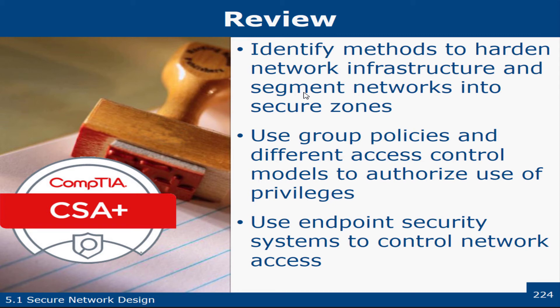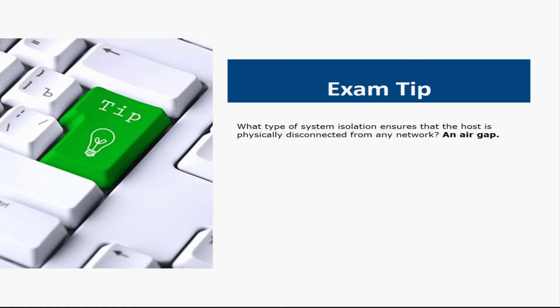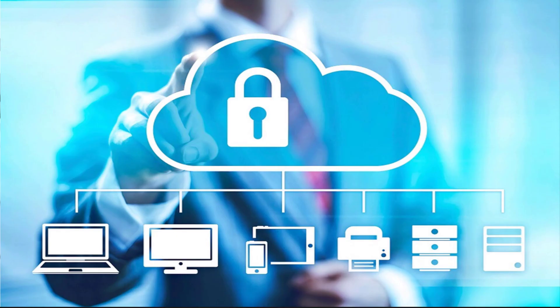We talked about different ways to harden the network. The most basic way is to not connect it to the network in the first place, but that's not realistic — you may need VLANs, VPNs, or other virtualization. Have policies in place and make sure you have endpoint security systems. Exam tip: what type of isolation ensures the host is physically disconnected from any network? That's an air gap. And what type of attack does MAC limiting mitigate? ARP spoofing and flooding attacks.